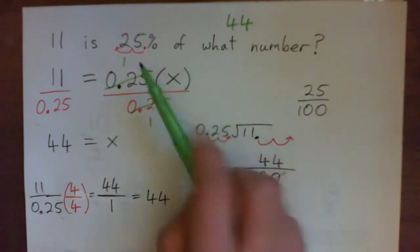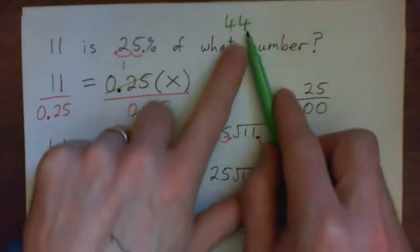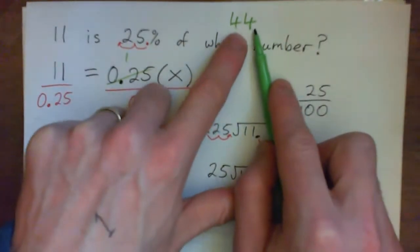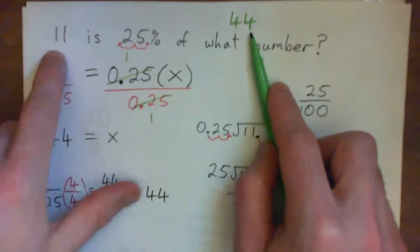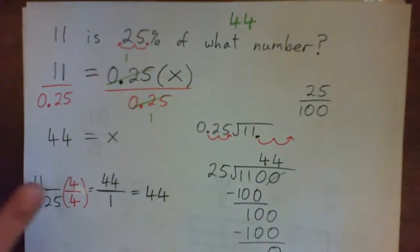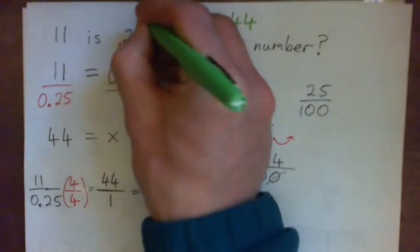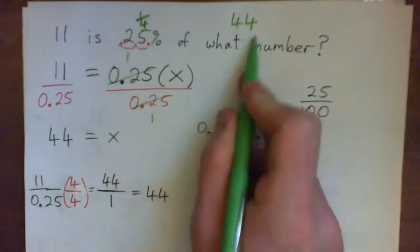Well, 25% is going to give us something that's less than 44, which 11 is less than 44. And in fact, if you know, 25% is a quarter. And a quarter of 44—11 is one quarter of 44, isn't it?